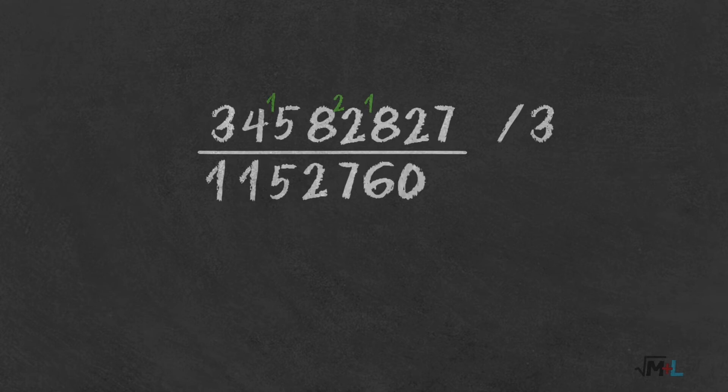2 by 3 is 0, so 2 remains, and 27 by 3 is 9. The result? 11527609. This method is good enough, but the second is better.